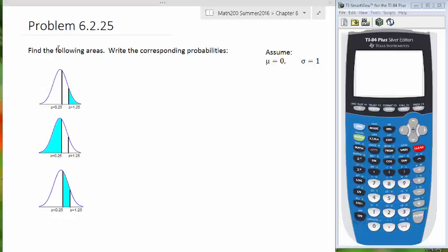This is a problem from section 6-2, similar to your homework. Find the following areas, write the corresponding probabilities. I know that in the homework they encourage you to use the tables, but I want to encourage you to use your calculators.